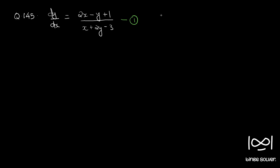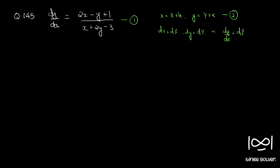The substitution for such cases is: small x equals capital X plus h, and small y equals capital Y plus k — let's call it Equation 2. Differentiating both sides we get dx equals dX and dy equals dY, so dy/dx equals dY/dX — let's call this Equation 3.